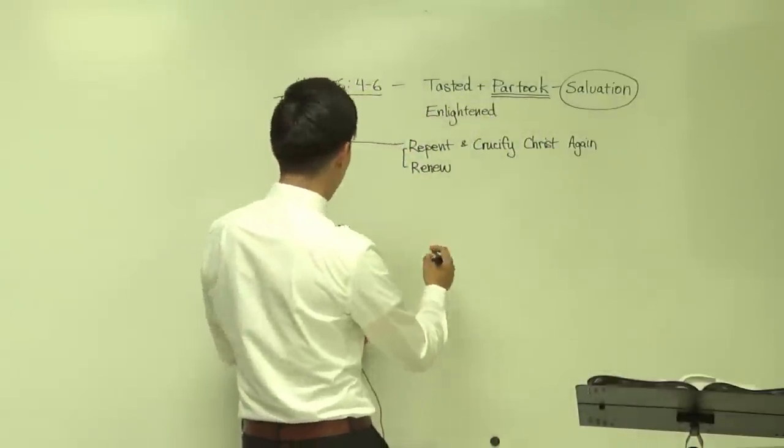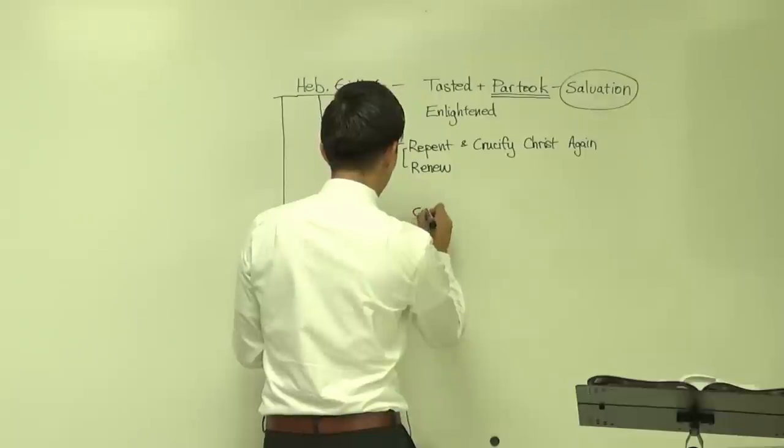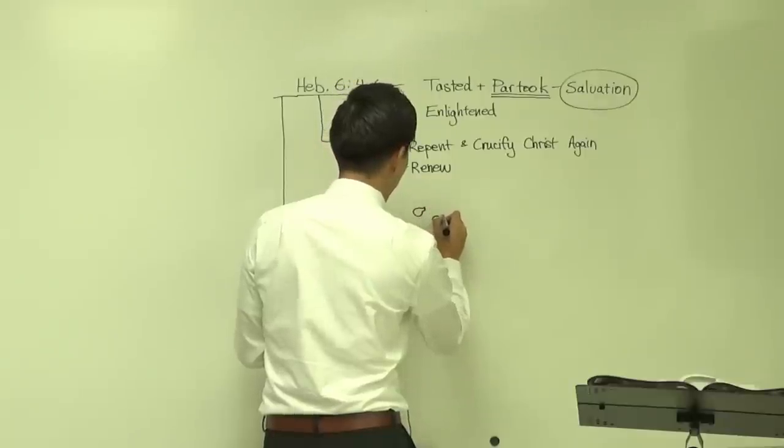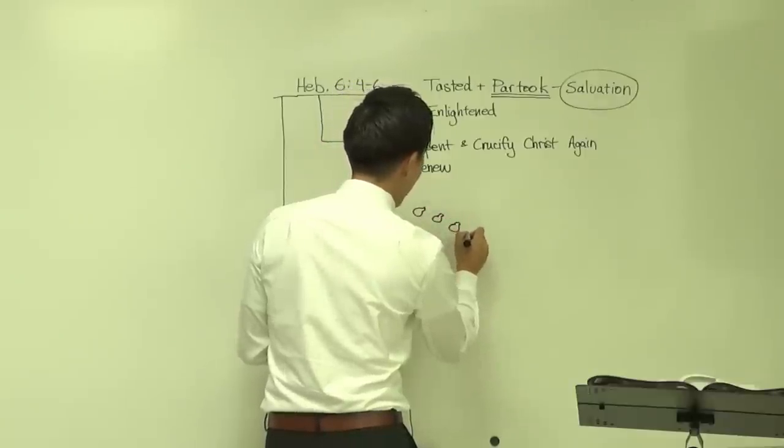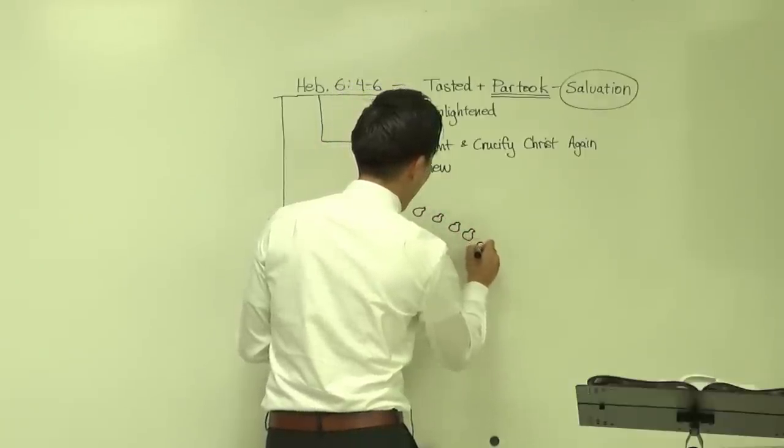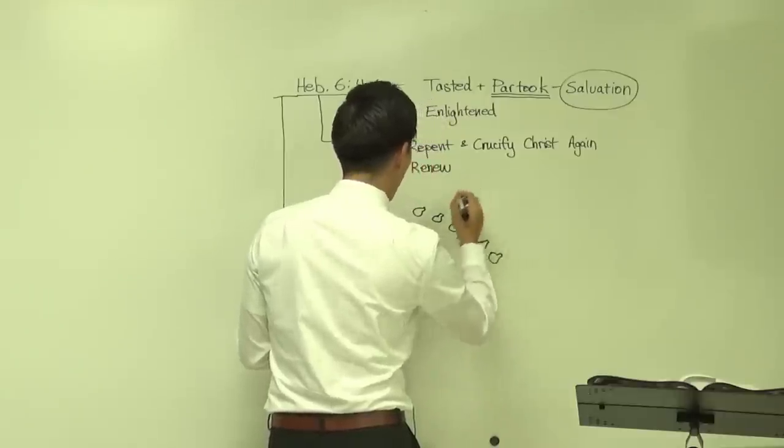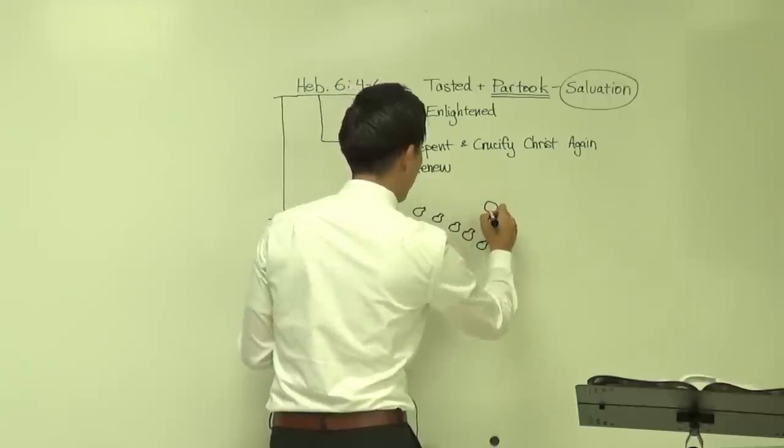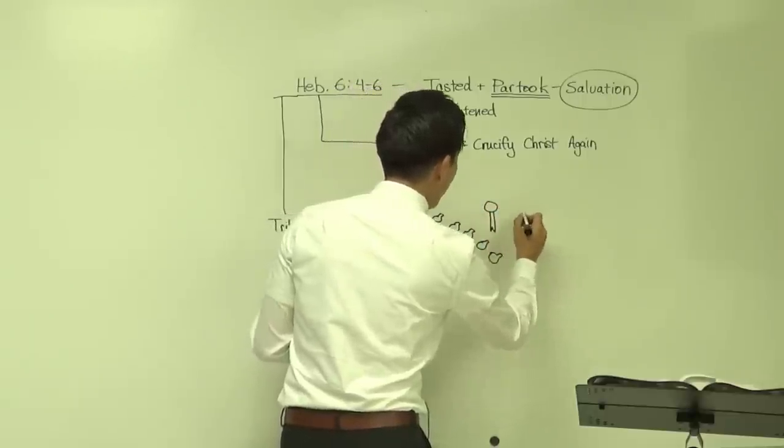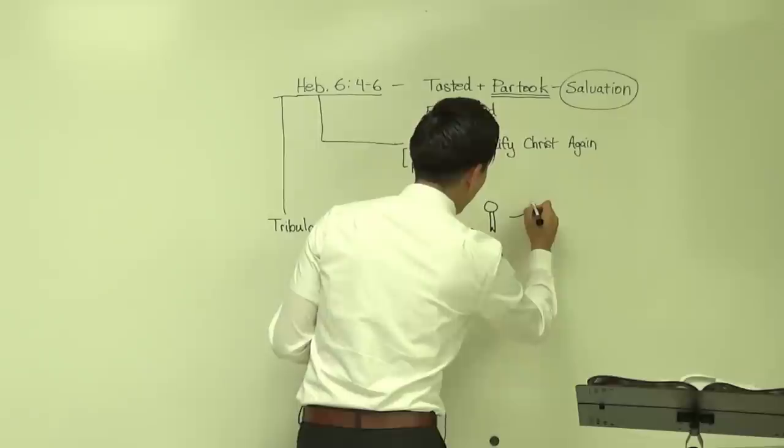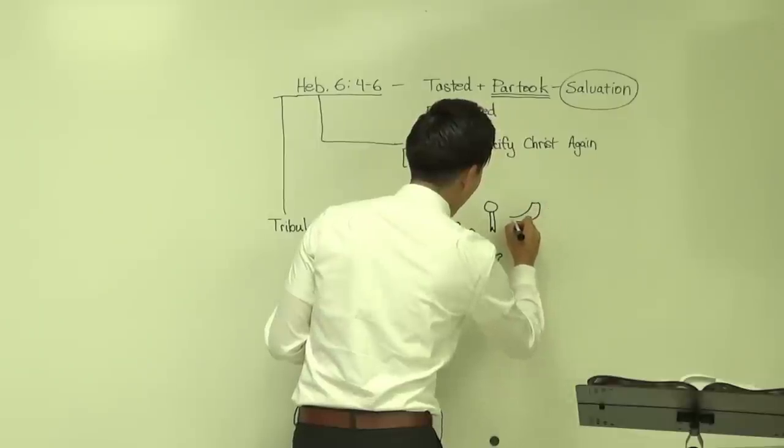That matches with Hebrews chapter 2. So this is all tribulation application over here. There is no doubt that all of this timeline is referring to the tribulation application where there's going to be seven vials and there's going to be seven trumpets and then there's going to be seven seals. So this is all an application toward the tribulation timeline over here, actually.